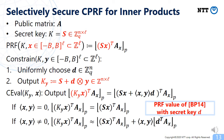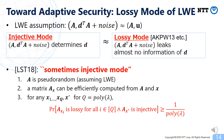Unfortunately, we cannot prove adaptive security in this way, so we need additional ideas. For achieving adaptive security, we rely on the technique referred to as the lossy mode of LWE. The LWE assumption says that an LWE tuple of the form (A, D^T A + noise) is computationally indistinguishable from uniform. We consider two modes for the public matrix A. In the injective mode, the LWE tuple information-theoretically determines the secret vector D. In the lossy mode, the LWE tuple leaks almost no information about D. Importantly, matrices in these two modes can be generated in a computationally indistinguishable way.